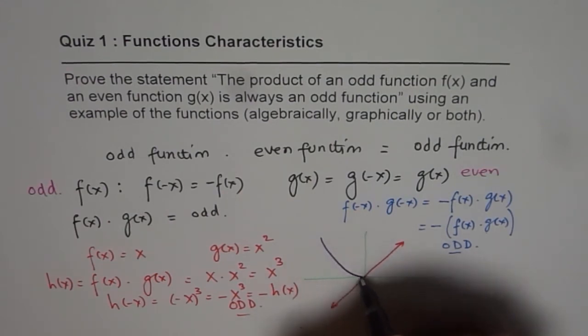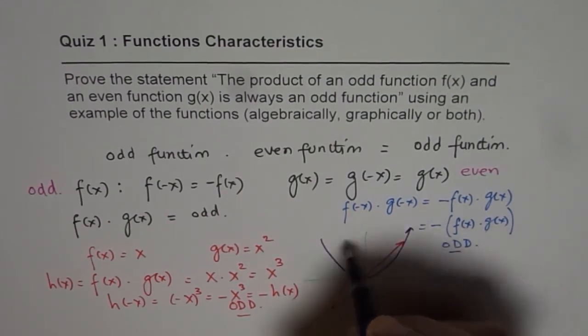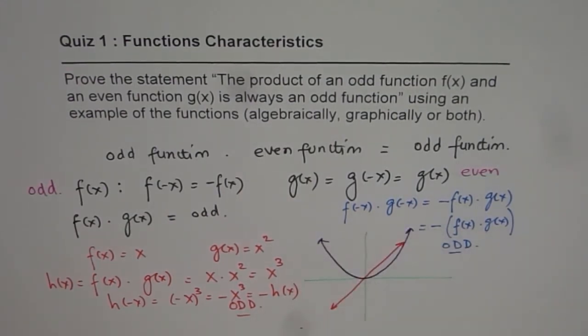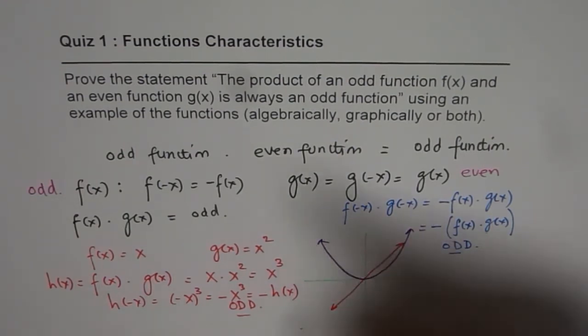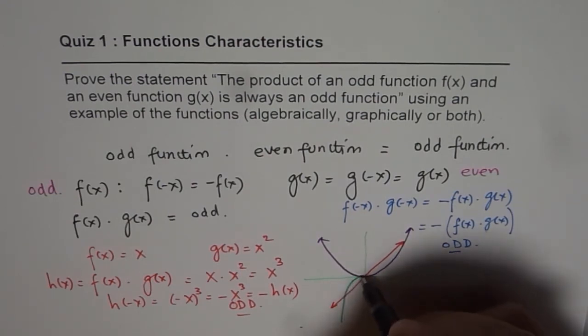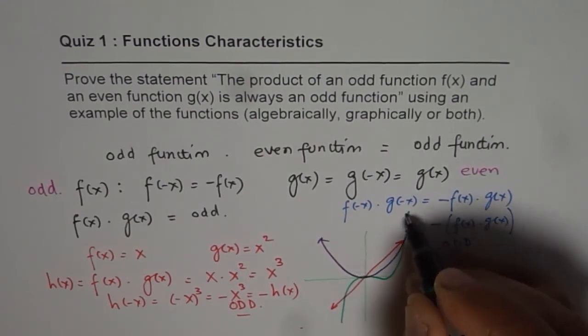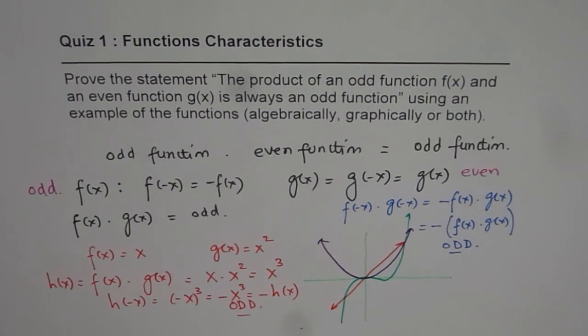Now, both have domain of all real numbers. Now if you combine these two, what you get is x cubed. So x cubed will be like this, which will be an odd function.